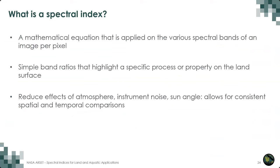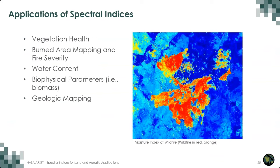These indices also allow for consistent estimates of things like vegetation health across space and time. There are more than 100 vegetation indices that have been derived from multispectral imagery. Applications of spectral indices include vegetation health, burned area mapping and fire severity, water content, biophysical parameters, geologic mapping, and much more.